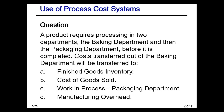A product requires processing in two departments — the baking department and then the packaging department — before it is completed. Cost transferred out of the baking department: if it starts in the baking department and then part of the process is to package them, it will go right into the WIP packaging department.